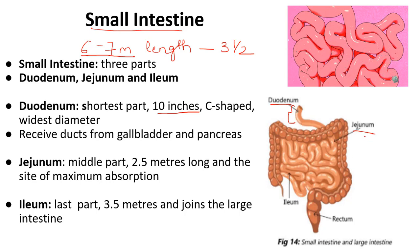After that you have a larger part, that is jejunum. Jejunum is a very important part of the small intestine because maximum absorption takes place here. As we studied in the steps of nutrition — ingestion, digestion, and then absorption — once the food is broken down into simple substances, it has to be absorbed from the small intestine and then transported to all parts of your body via the blood.